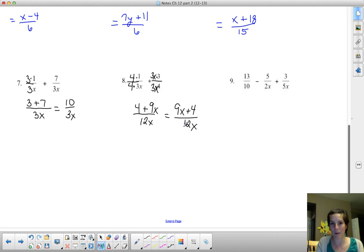It's technically a harder problem, right? 9x plus 4 is a quantity, so unless I can undistribute something, I can't simplify any further. So I'm done.